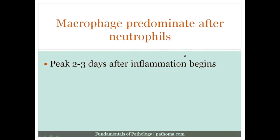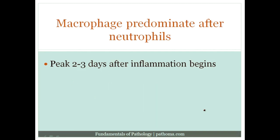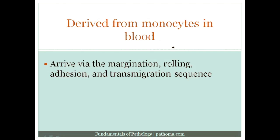Once the neutrophils have done their job, the next phase is to bring in the macrophages. There are three phases of acute inflammation: a fluid phase occurring immediately; a neutrophil phase peaking at 24 hours; and then the macrophage phase. Macrophages peak two to three days after inflammation begins. They're derived from monocytes in the blood — monocytes get into tissue and we then call them macrophages.